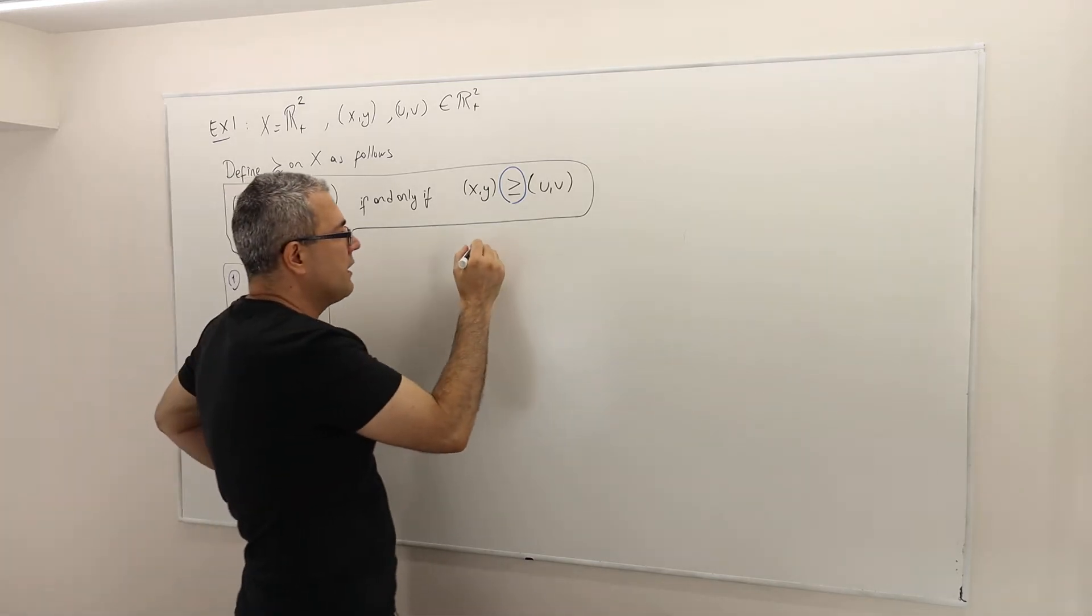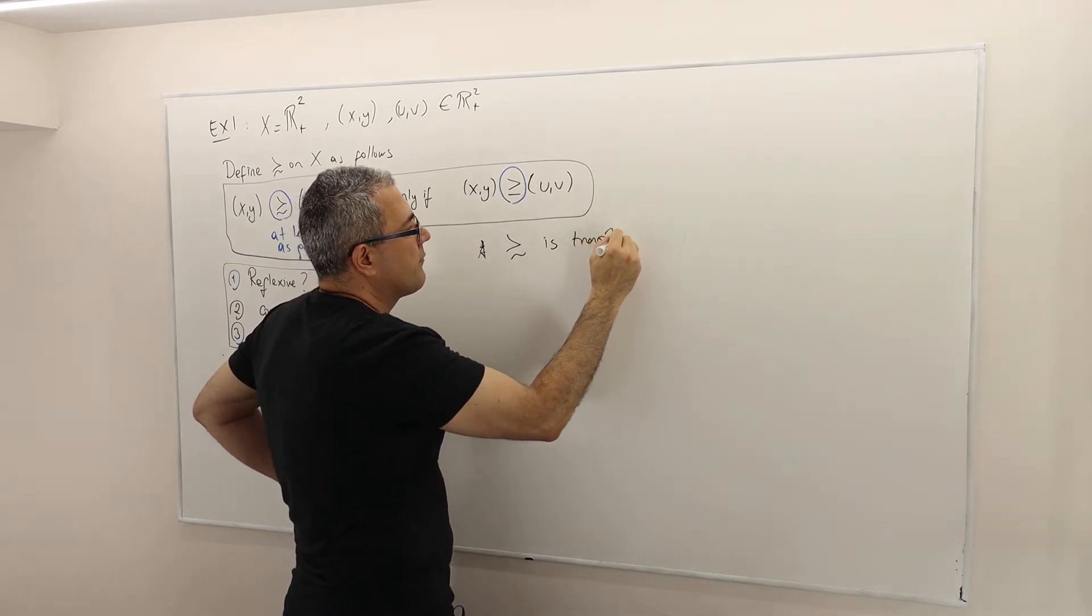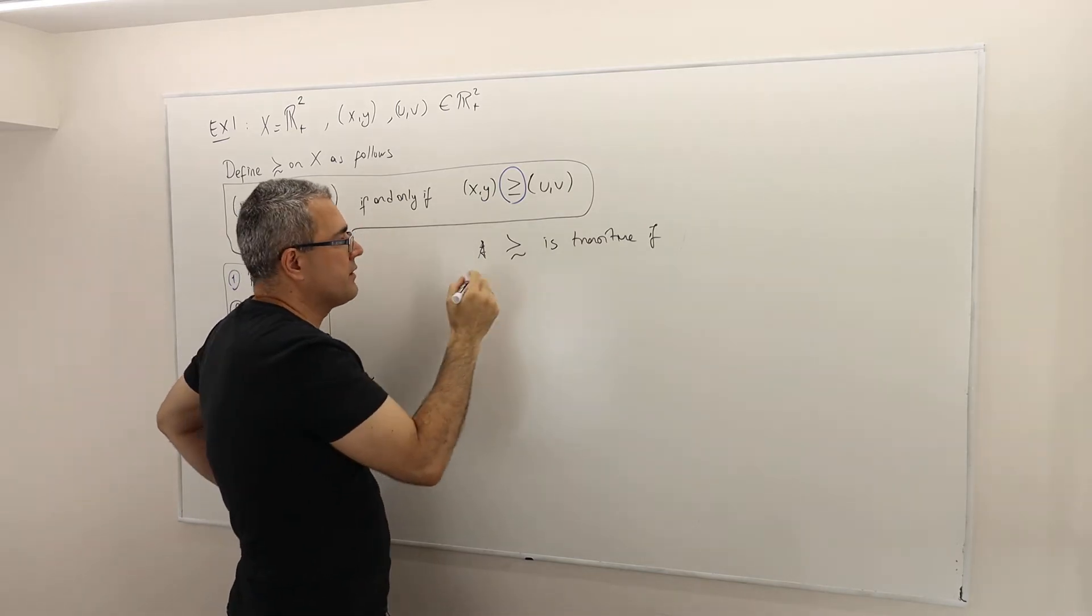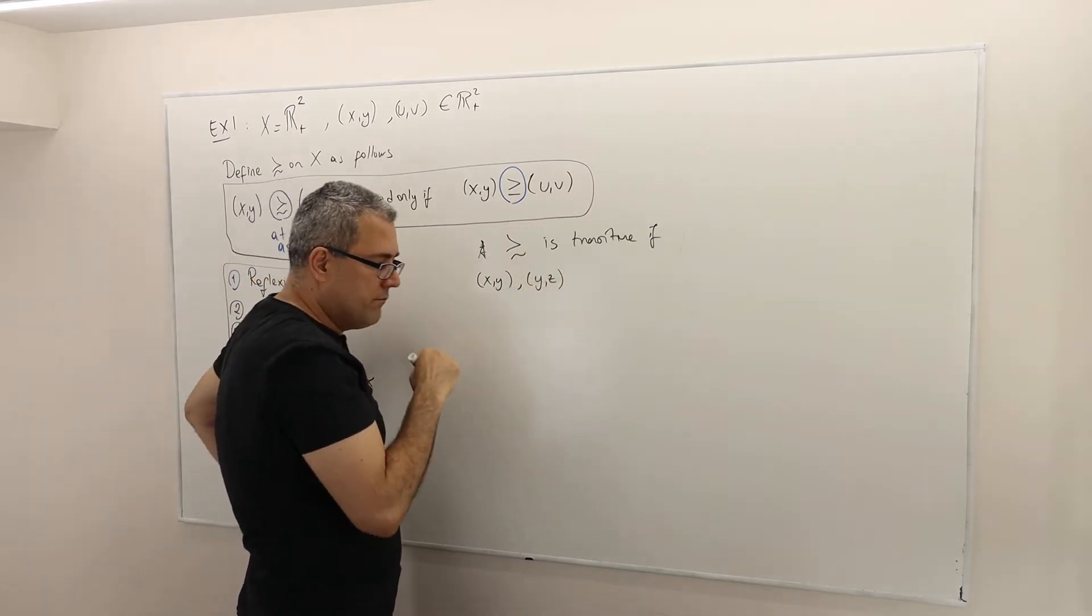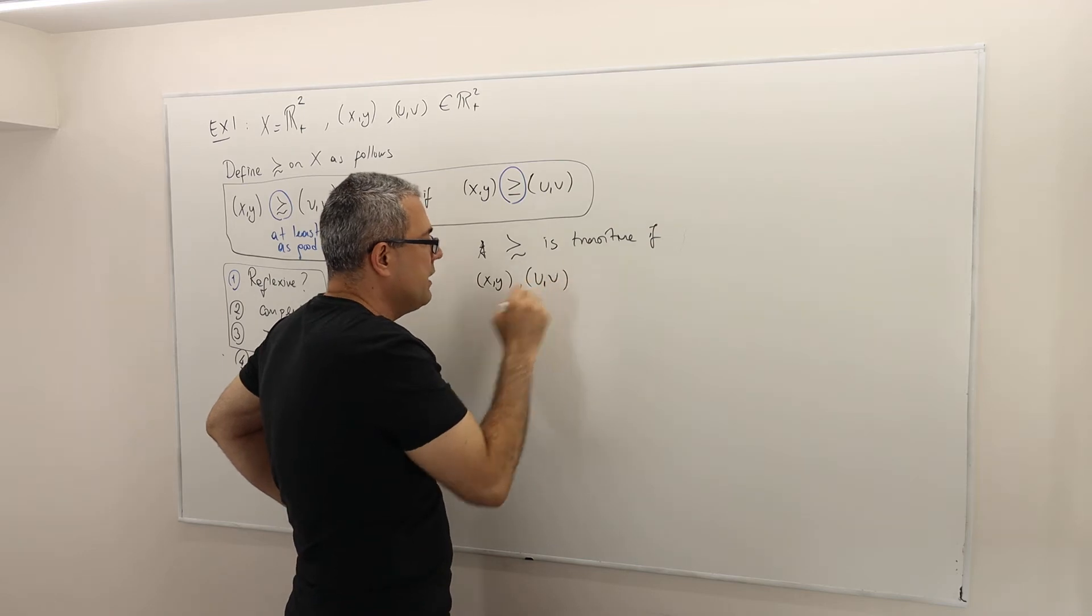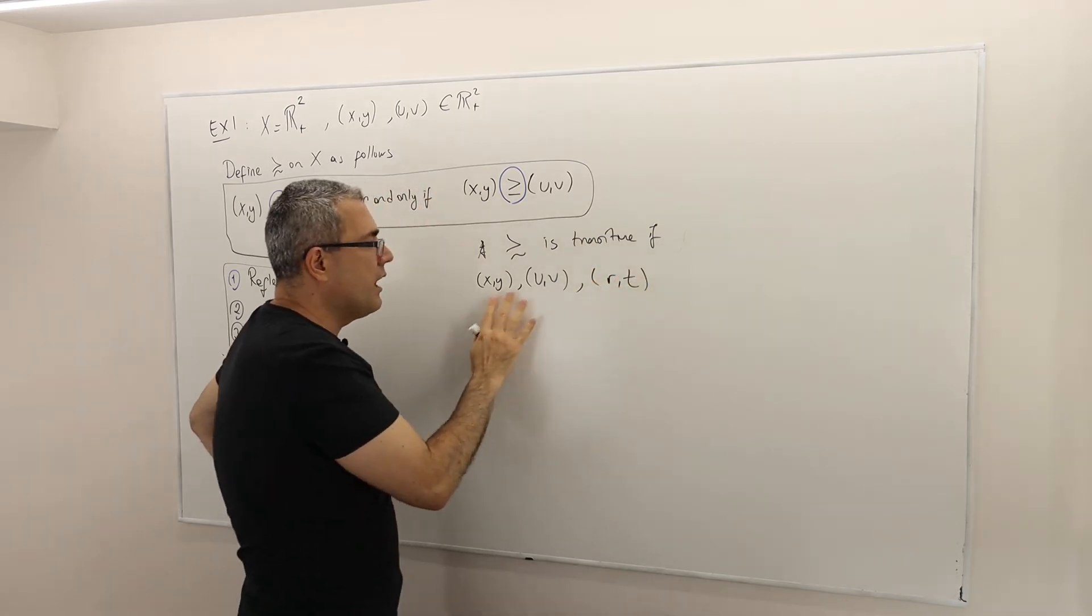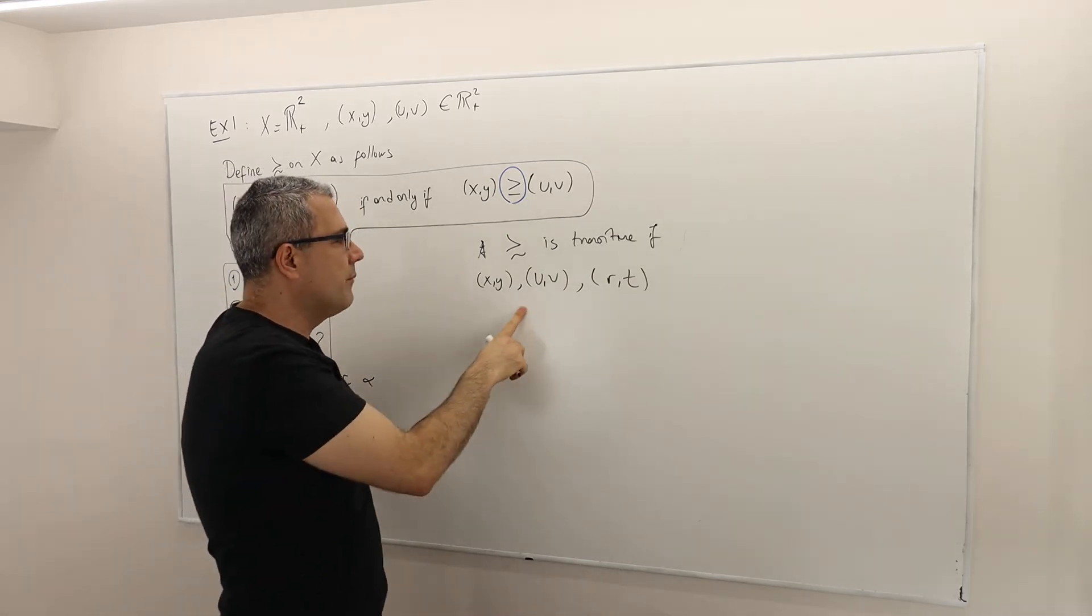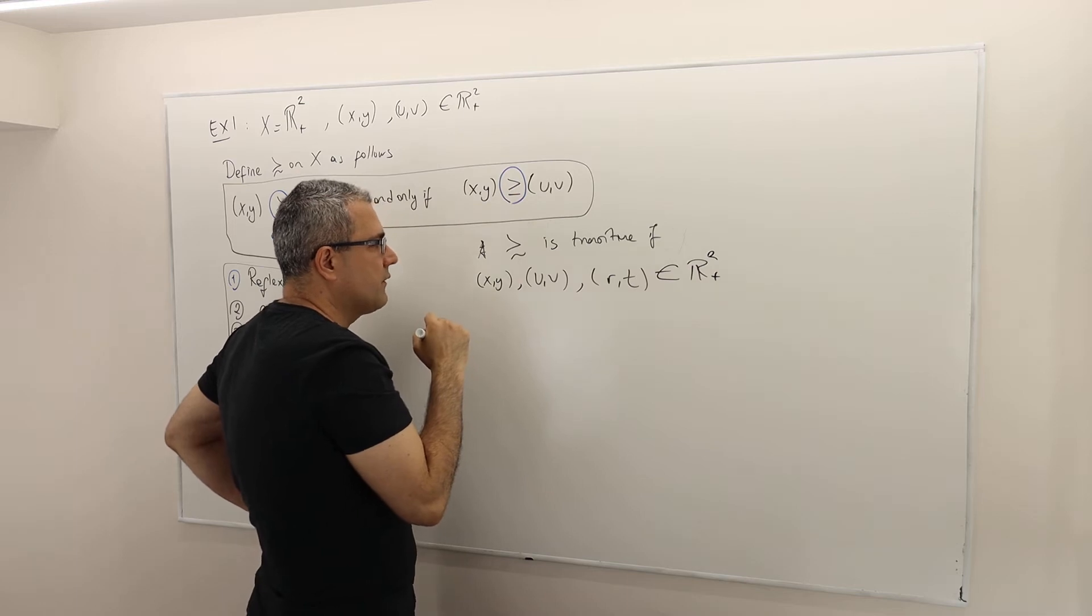So now the transitivity. The binary relation is transitive if, and only if, now I need to pick three alternatives, meaning three vectors. X, Y, U, V, I'm sorry. And then U, V, R, T. So they are potentially different vectors. They don't have to be the same, but they are potentially different vectors in R square plus, such that if...